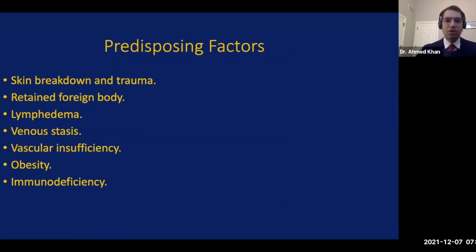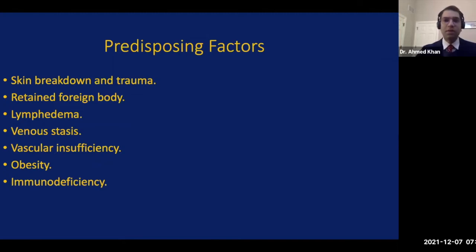Something that is common to all of these conditions — the predisposing factors — include skin breakdown and trauma, retained foreign bodies, lymphedema, swelling, venous stasis, vascular insufficiency, obesity, poor hygiene, and immunodeficiency. We will talk about some of the more unique ones as we go through each of these conditions.